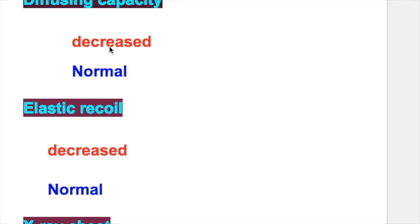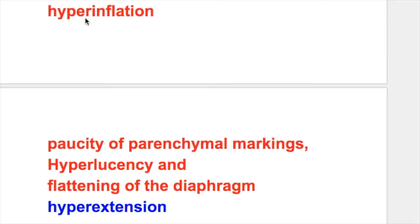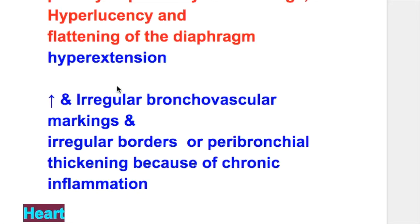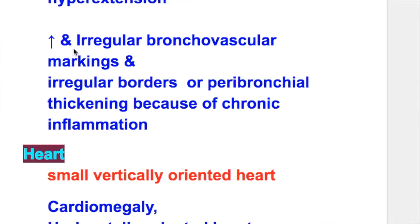Diffusing capacity is decreased in emphysema and normal in bronchitis. Elastic recoil is decreased in emphysema and normal in bronchitis. X-ray chest in emphysema shows hyperinflation, paucity of parenchymal markings, hyperlucency and flattening of the diaphragm. X-ray in chronic bronchitis shows hyperinflation but not as marked as in emphysema, with increased and irregular bronchovascular markings and peribronchial thickening due to chronic inflammation.